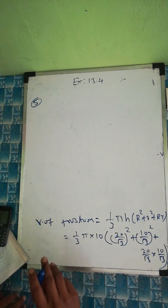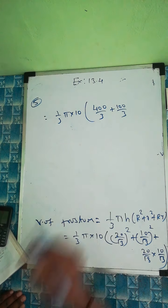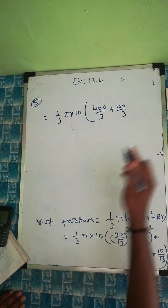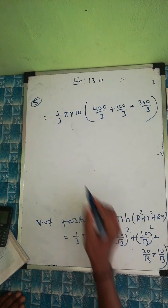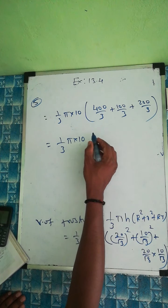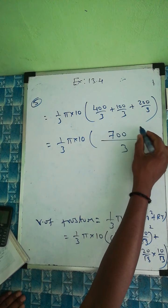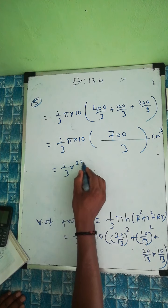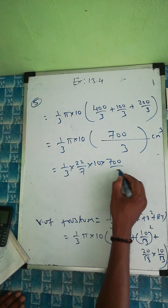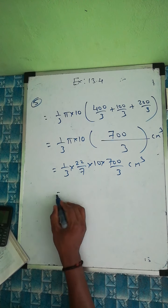Calculating each term: R² = 400/3, r² = 100/3, and Rr = 200/3. Adding them: 400/3 + 100/3 + 200/3 = 700/3. So volume = (1/3)π × 10 × 700/3 cm³. Substituting π = 22/7: volume = (1/3) × (22/7) × 10 × 700/3 cm³.